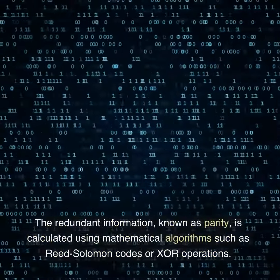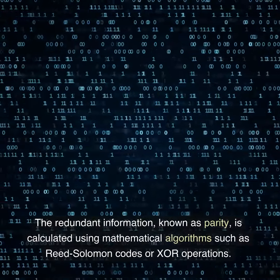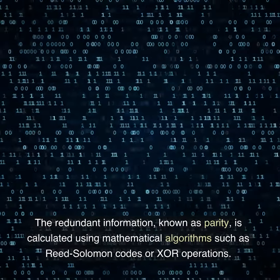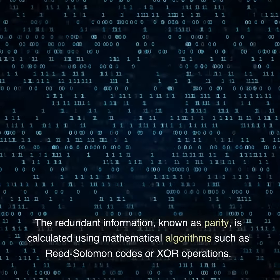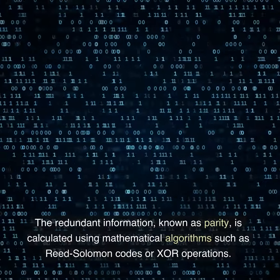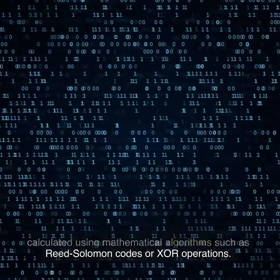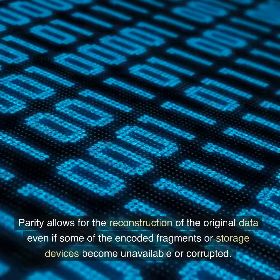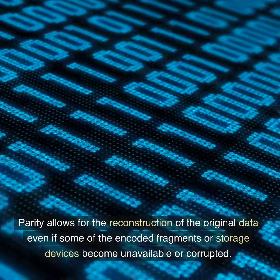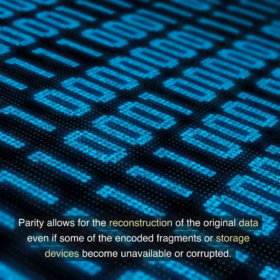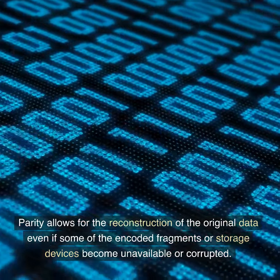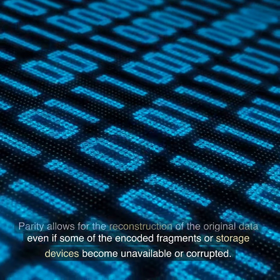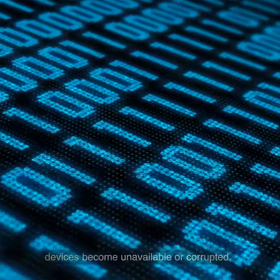The redundant information, known as parity, is calculated using mathematical algorithms such as Reed-Solomon codes or XOR operations. Parity allows for the reconstruction of the original data even if some of the encoded fragments or storage devices become unavailable or corrupted.